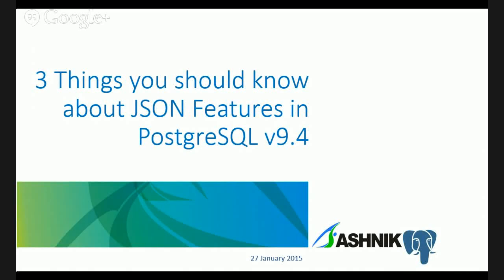Hi everyone, welcome to the Postgres Google Hangout. This is Shreyas Deshmukh from Ashnik. Ashnik is an open source solutions provider with presence across Southeast Asia, UK, US and India. We provide Postgres SQL services, database solutions and training across these regions. We are also the master partner of EnterpriseDB in Southeast Asia. In today's Postgres Google Hangout, we are going to focus on three things you should know about the JSON features in Postgres SQL version 9.4. Samir Kumar, Ashnik's database solution architect, would be giving you a detailed insight about this topic. Over to you, Samir.